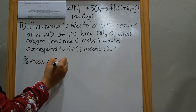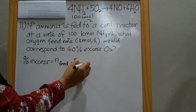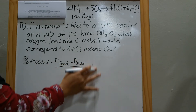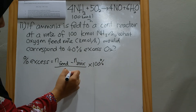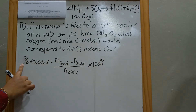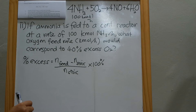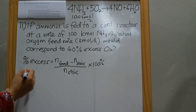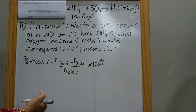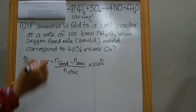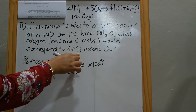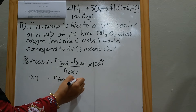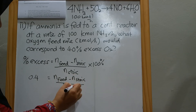The percentage excess equation is: percentage excess equals (n_feed minus n_stoic) divided by n_stoic, multiplied by 100. Since O2 is our excess reactant at 40 percent excess, the fractional excess is 0.4 (dividing 40 percent by 100). The equation becomes: 0.4 equals (n_feed minus n_stoic) divided by n_stoic.